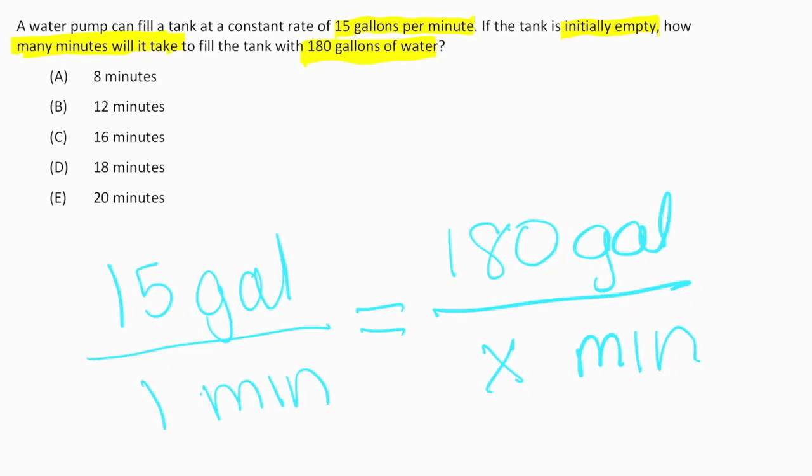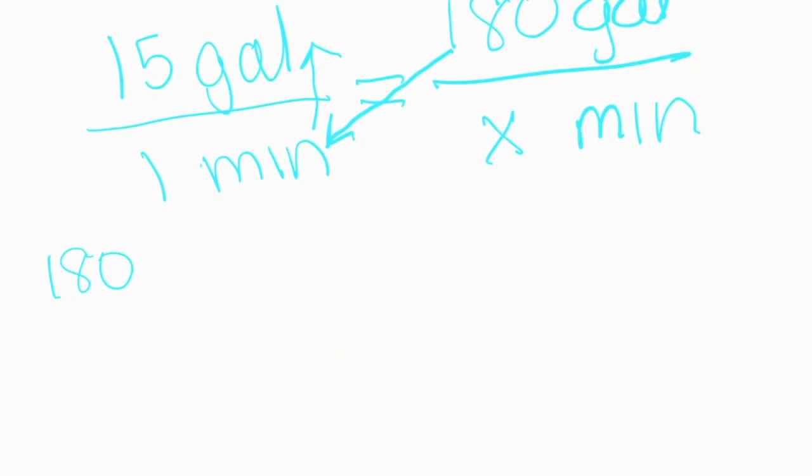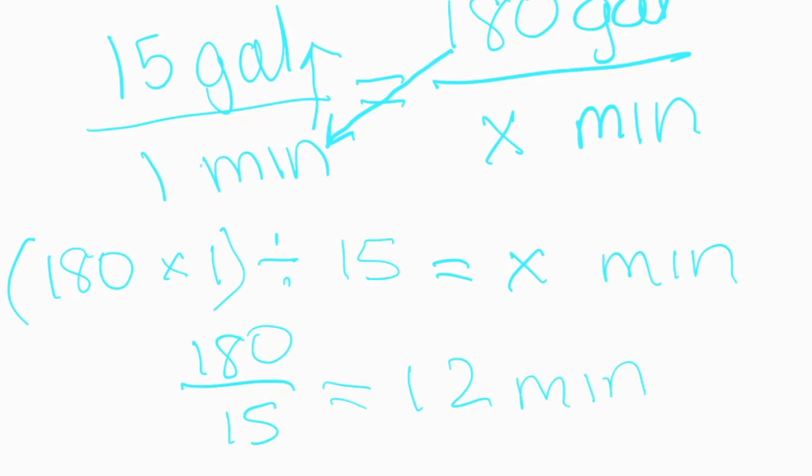We know that we're going to do 180 times 1 divided by 15. So we plug into our calculator the following: 180, you could do times 1 if you want to, divided by 15. That's going to give us our answer of how many minutes it takes. When we plug in that 180 divided by 15, we see that our answer is 12 minutes.